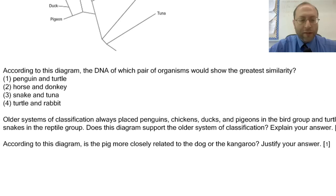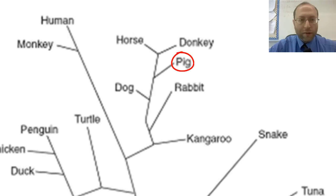Last question on this slide: according to this diagram, is the pig more closely related to the dog or the kangaroo? Here's the pig, and here we see the dog, and here we see the kangaroo. The most recent common ancestor for the kangaroo and the pig is also the most recent common ancestor for the dog. But the most recent common ancestor for the dog and the pig is not the most recent common ancestor for the kangaroo. That means that the pig is more closely related to the dog than it is to the kangaroo.